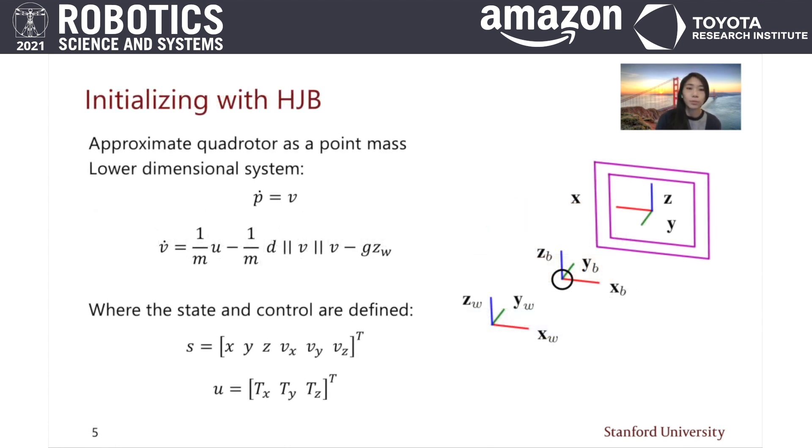In our HJB problem, we approximate the quadrotor as a point mass subject to drag forces, allowing us to model the system as a lower dimensional system. This model gives a 6-dimensional state of position and velocity and a 3-dimensional thrust control input.